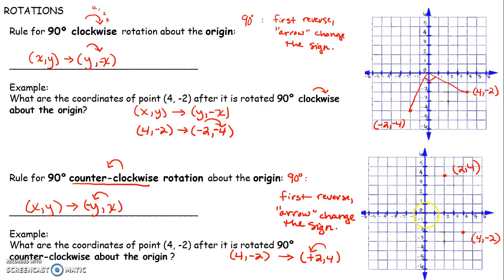Again, I want to make sure that if I draw a nice straight line from the origin to my original point, and a straight line to my image, I really do sweep out a 90 degree angle. I take the original point, pivot around the origin, turning it 90 degrees counterclockwise — it ends up right up there.